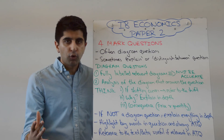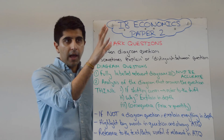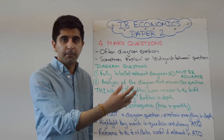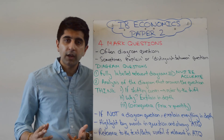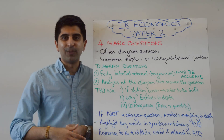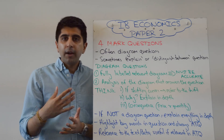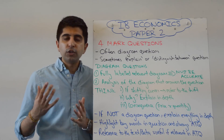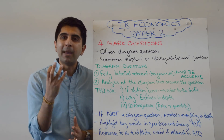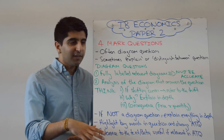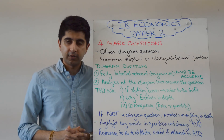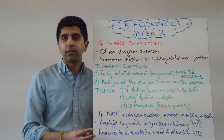Whatever diagram you've drawn, two things will be happening: your x-axis variable will be changing and your y-axis variable will be changing — you need to refer to both. If it's a micro diagram, that's price and quantity. If it's a macro diagram, that's price level and real GDP. So say: price has increased or decreased from P1 to P2, real GDP has increased from Y1 to Y2, or quantity has increased from Q1 to Q2. Always reference both — even if the question has nothing to do with price, still refer to the price and then really hit the quantity. That's so important to get the extra two marks on a diagram question.